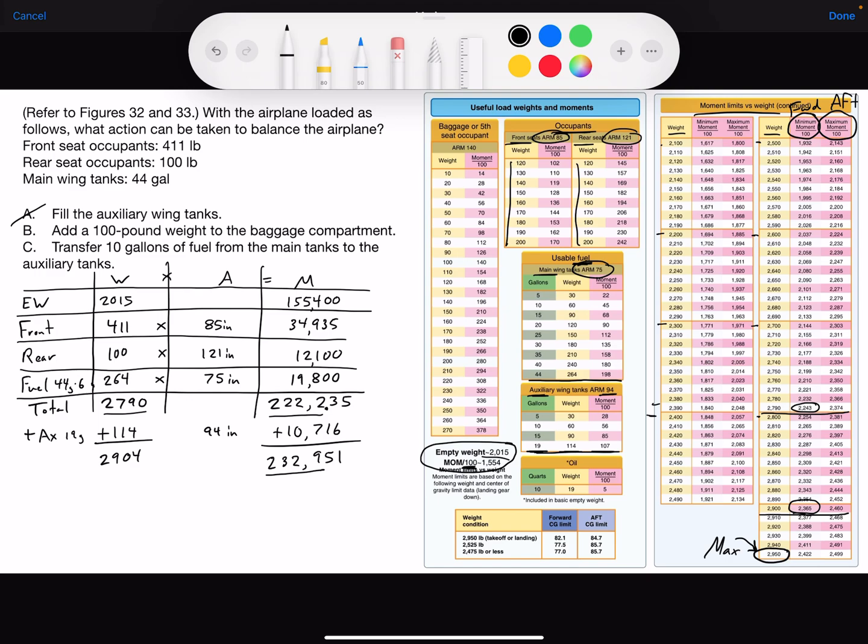Let's try bravo. Add 100 pound weight to the baggage compartment. Let me move this stuff out of the way. All right, so we're going to add to the baggage compartment. We're adding 100 pounds. 28.90.